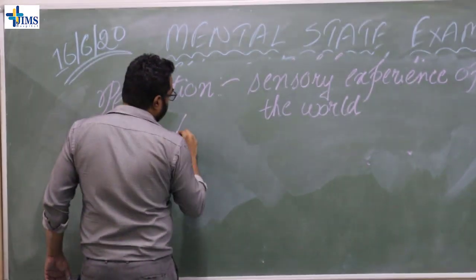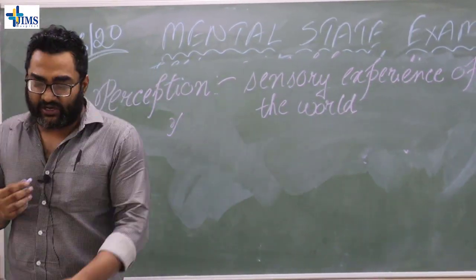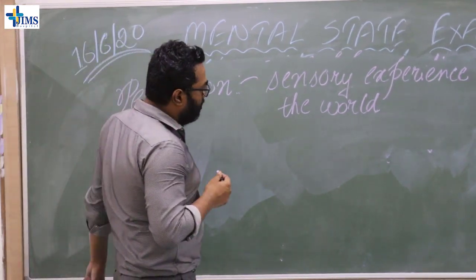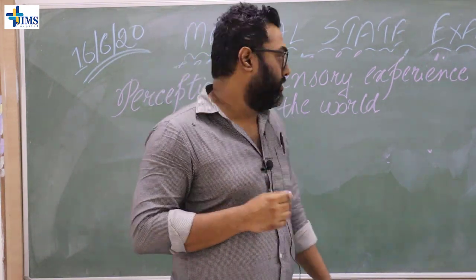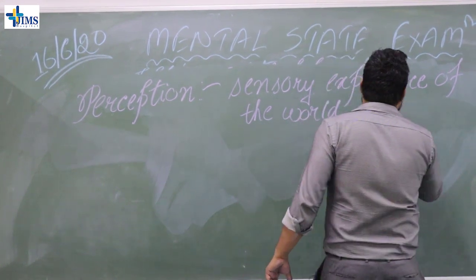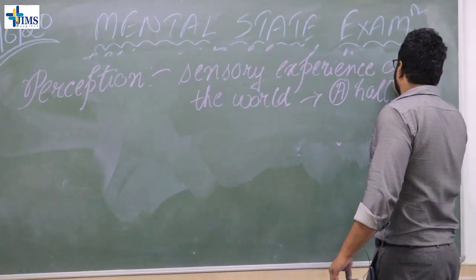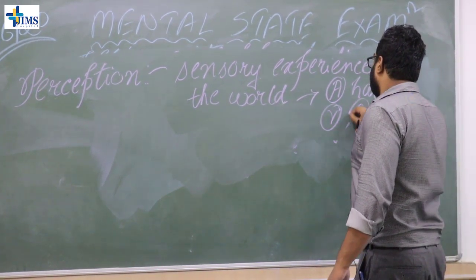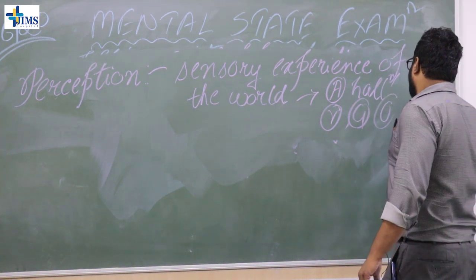We should always think about perceptual abnormalities and find out whether the patient is suffering from hallucination or not. The five types of hallucination are: auditory, visual, olfactory, tactile, and gustatory.